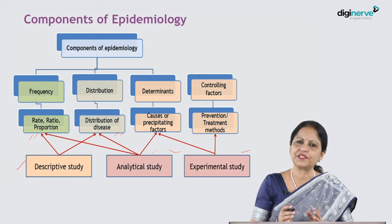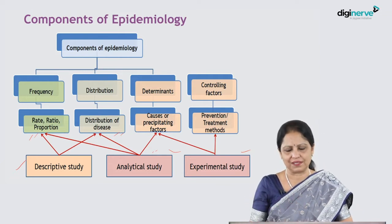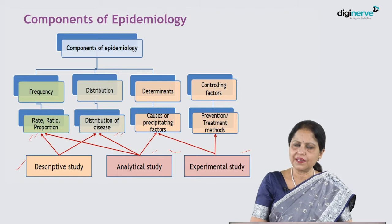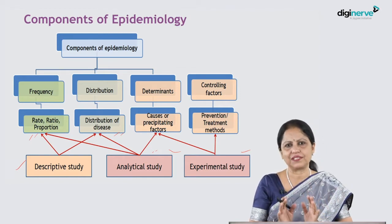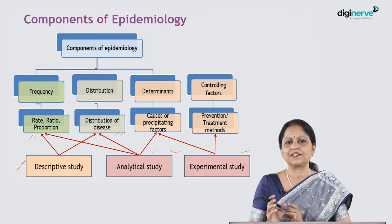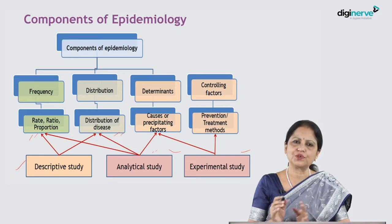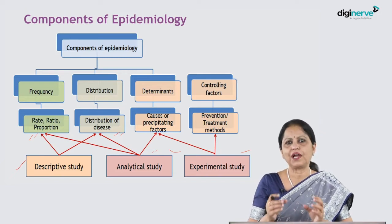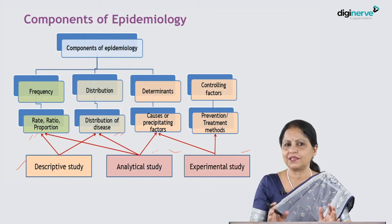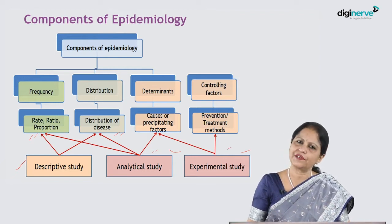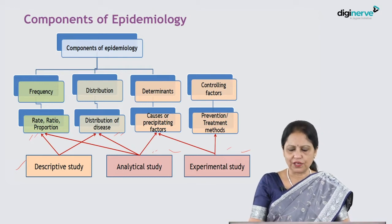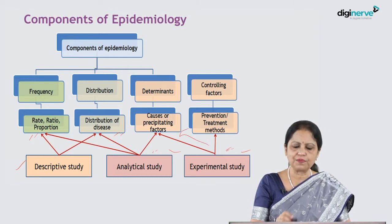In analytical studies we also find frequency and distribution, and in addition we find the causes or precipitating factors of the outcome — that is, the disease. Once we have formulated and tested the hypothesis, we identify certain preventive or therapeutic measures to control and prevent the problem. We then experiment with those measures to see whether they are safe and effective, which also provides indirect proof of the causes or precipitating factors.